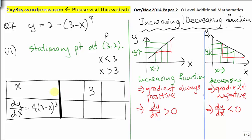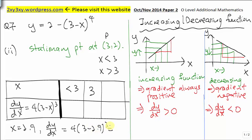Let's go back to our question. To test whether it's increasing or decreasing, I have set up a table with x values and dy/dx gradient values. We are supposed to test for x less than 3. Using a value near 3 — I'll use 2.9 — I substitute 2.9 into the dy/dx expression. It gives 4 times 10 to the power of negative 3. The value itself is not important; what matters is the sign.